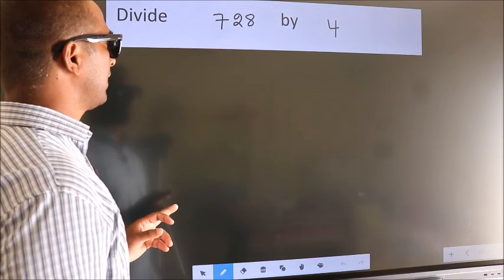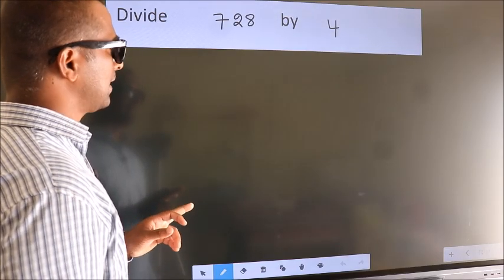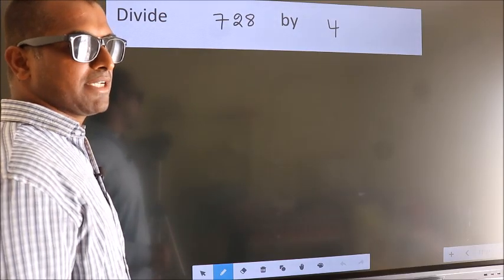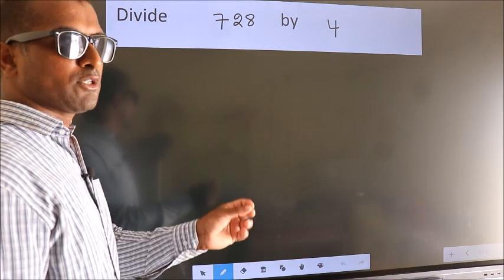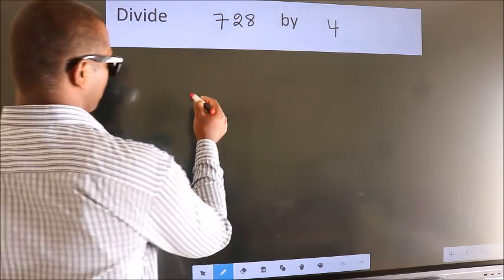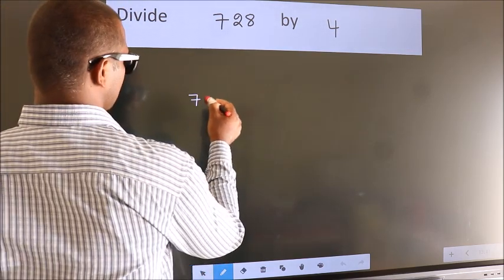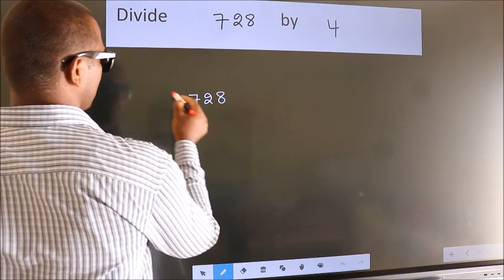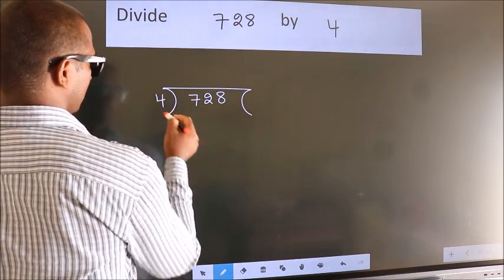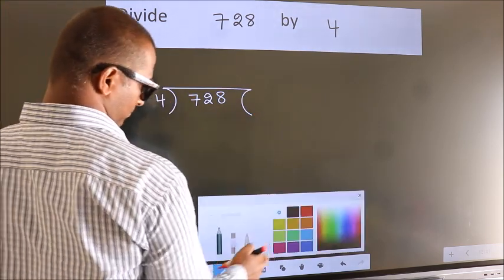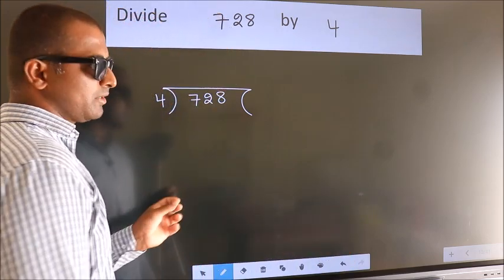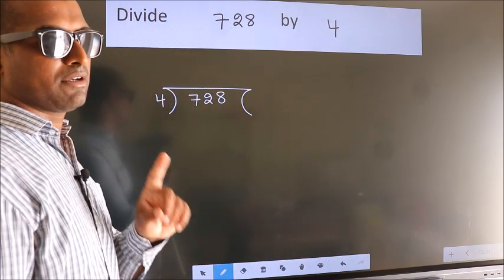Divide 728 by 4. To do this division, we should frame it in this way: 728 here, 4 here. This is your step 1.